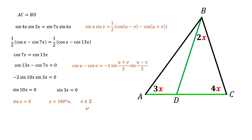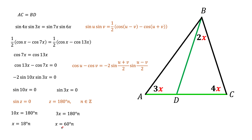That strange-looking Z symbol denotes the set of integers, so n can be 0, 1, −1, 2, −2, and so on. Applying this to our two equations: in the first case, 10x equals 180n, giving x equals 18n degrees. In the second case, similarly, 3x equals 180n, giving x equals 60n degrees.